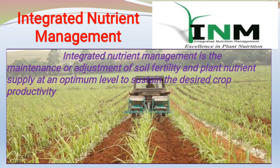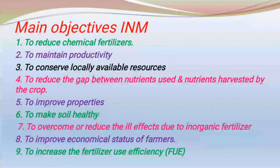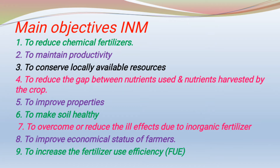The main objectives of integrated nutrient management are: to reduce the dependence on chemical fertilizer; to maintain productivity on a sustainable basis without affecting soil health, meaning to maintain soil productivity without any adverse soil effect; and to conserve locally available resources and utilize them judiciously.